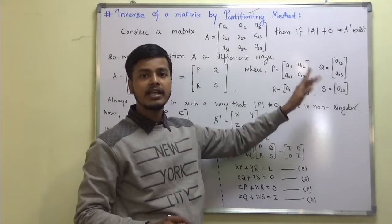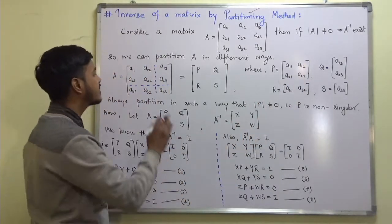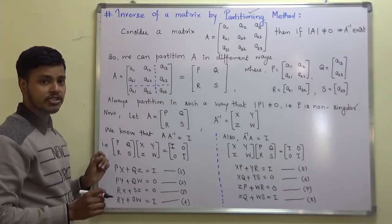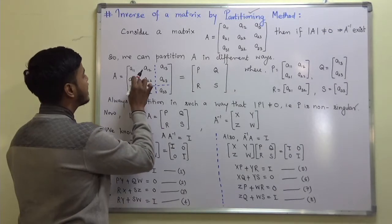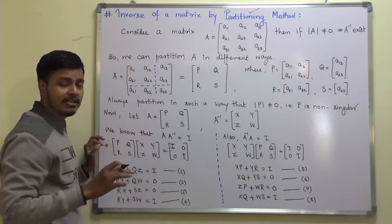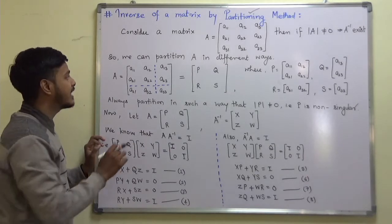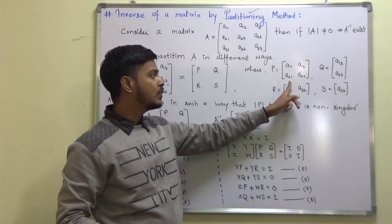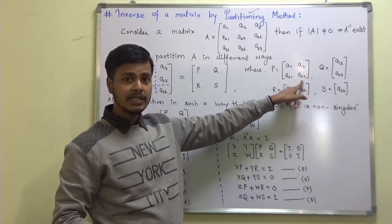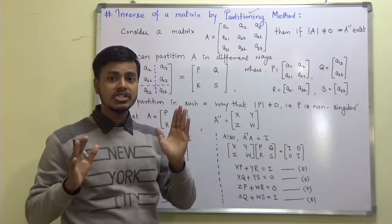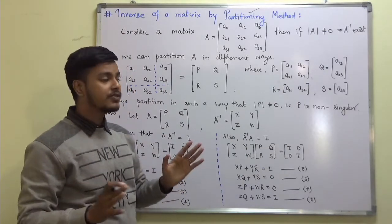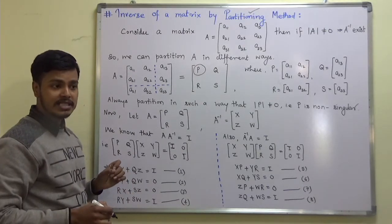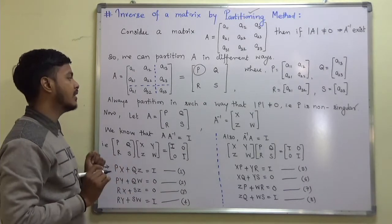Whenever you are making the partition, make sure that the matrix P you are taking should be a non-singular matrix. We have taken P to be A11, A12, A21, A22. We have to partition in such a way that the very first matrix P that we are getting should be non-zero.